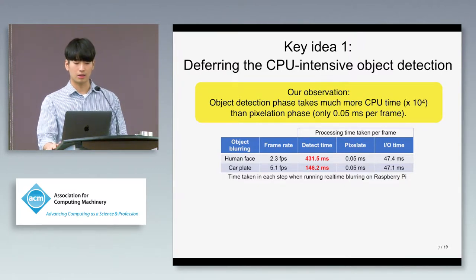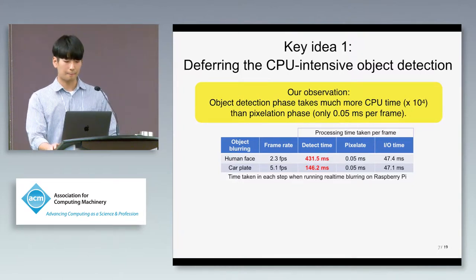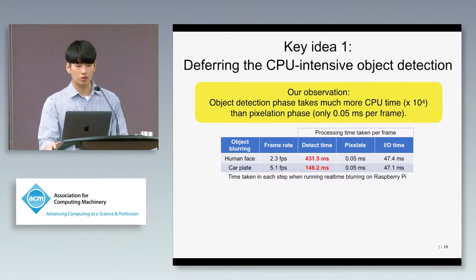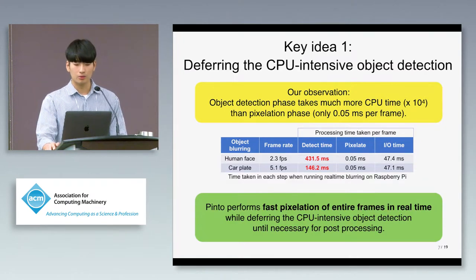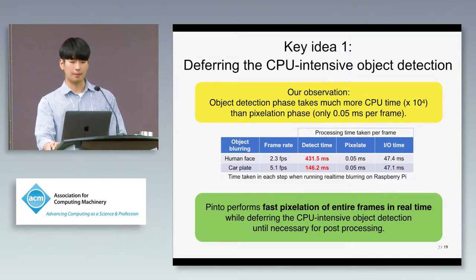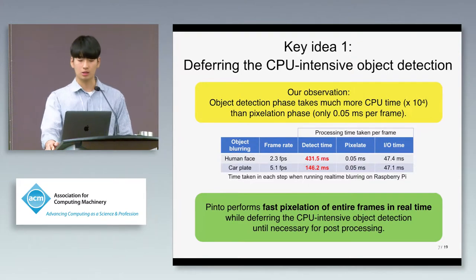We observed that the face and plate detection phase is the main bottleneck for object blurring, taking orders of magnitude more CPU time than the pixelation phase. By exploiting such computational asymmetry, Pinto performs fast pixelation of entire frames in real-time while deferring CPU-intensive object detection until necessary for post-processing.